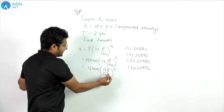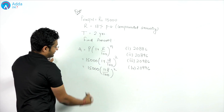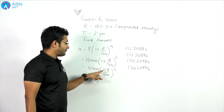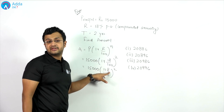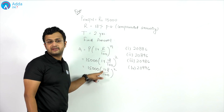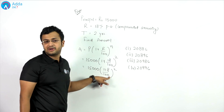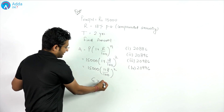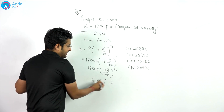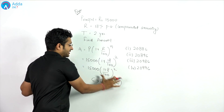The digital sum of 15,000: 1 plus 5 is 6. So the digital sum is 6. Now multiply by the digital sum of 118/100: 1 plus 8 equals 9, and 9 is equivalent to 0. Then 1 plus 0 plus 0 is 1, giving us 1 over 1, which is 1. So 1 squared is 1, and 1 into 6 equals 6. Therefore, the digital sum of the amount is 6.